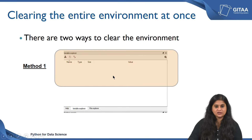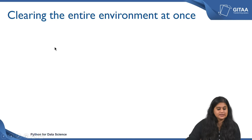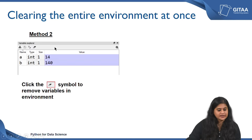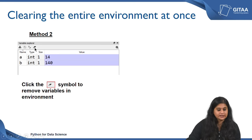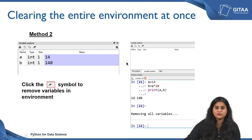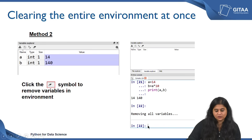If you would like to proceed then type y, otherwise type n. Once you hit Enter you will see that the entire environment has been cleared out. Now let us see how to clear the environment using an icon. Above the variable explorer there are a couple of icons — the one on the extreme right looks like an eraser. Click on the icon and it will prompt you with a dialog box. If you click OK all the variables will be removed, and it will show the message removing all variables.